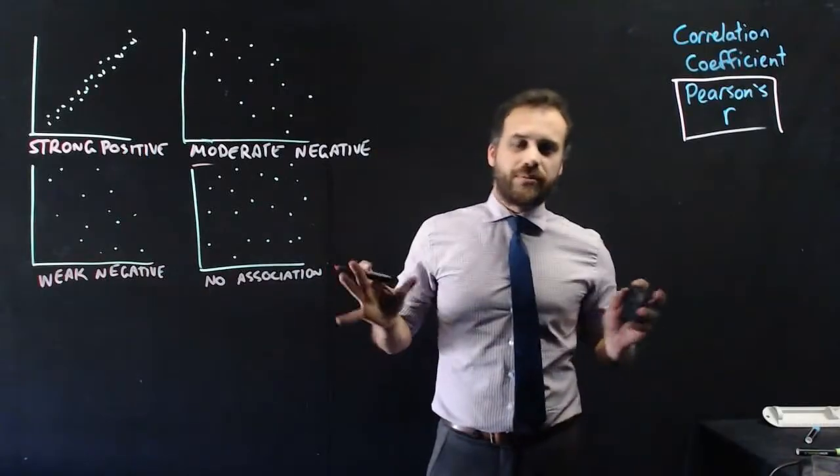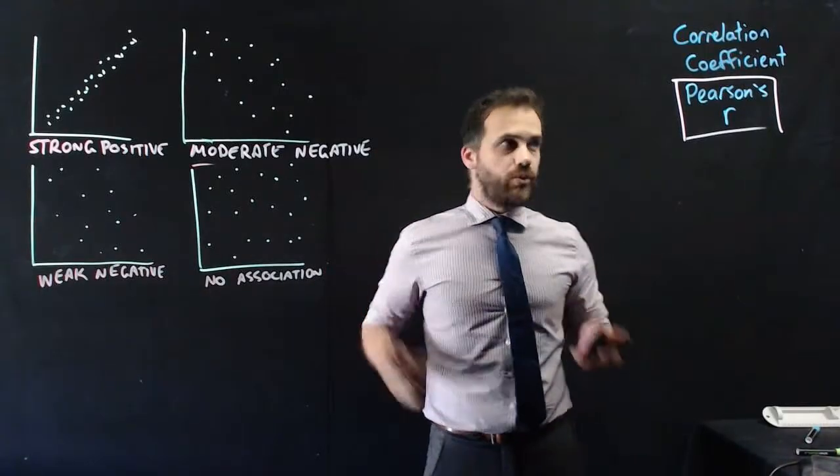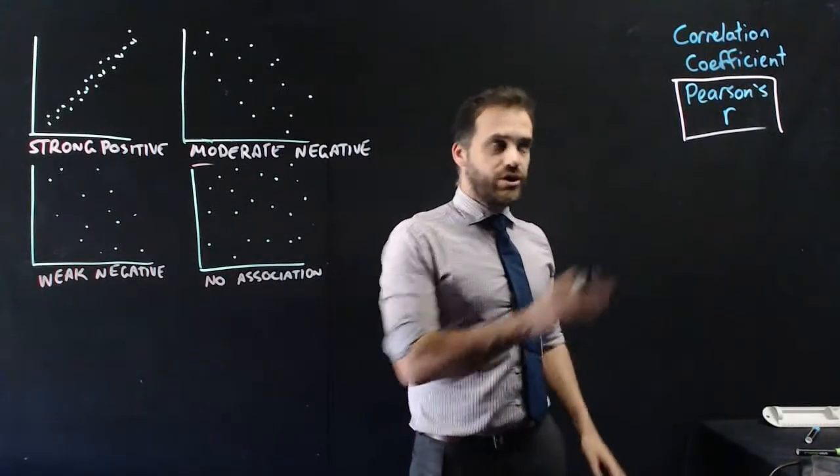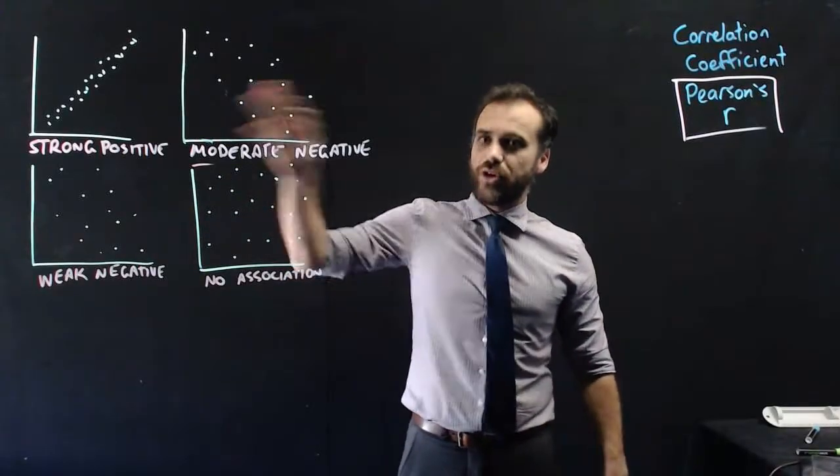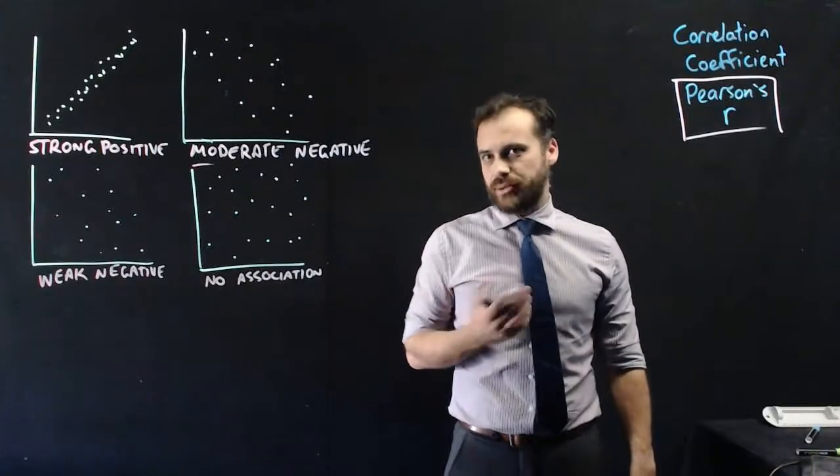Words, words, words. I'm a maths teacher, numbers is what I want. Correlation coefficient, Pearson's R, is a number that we can use to describe the association in a scatterplot.